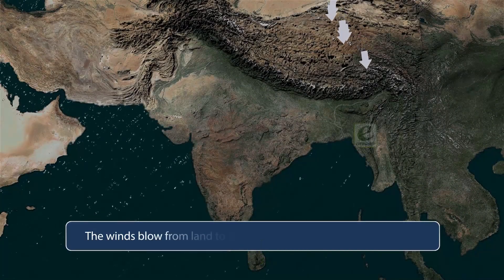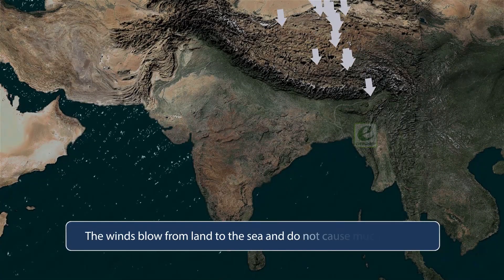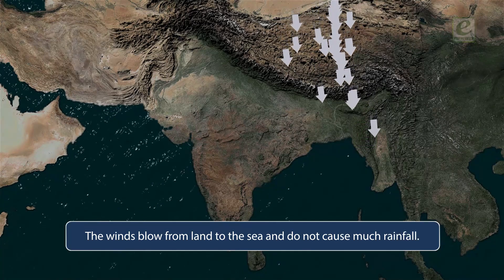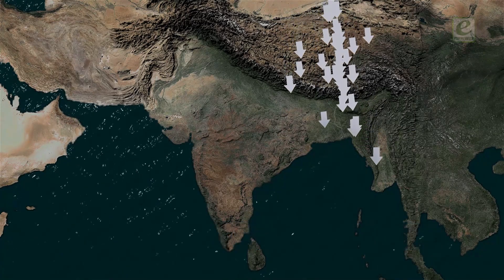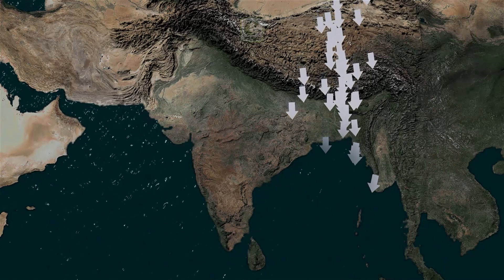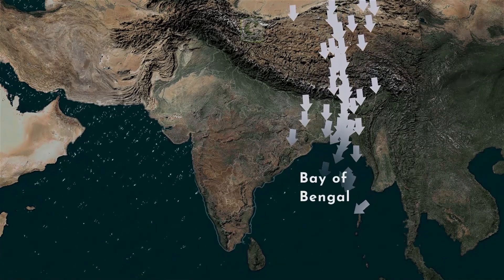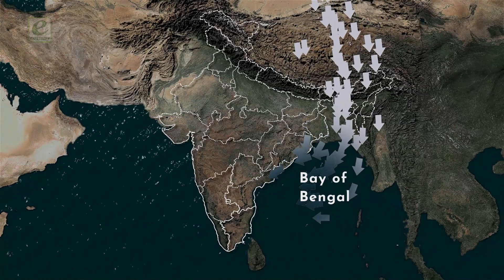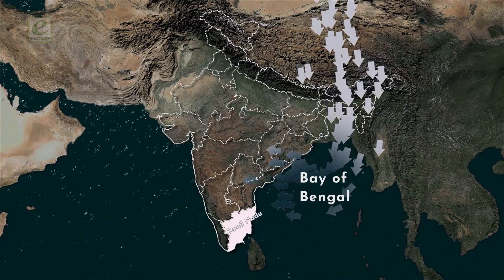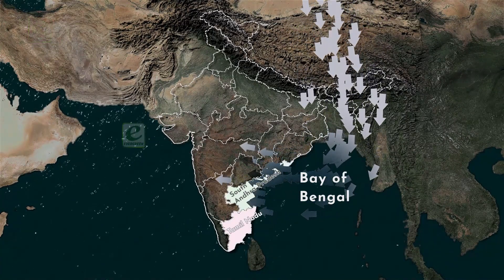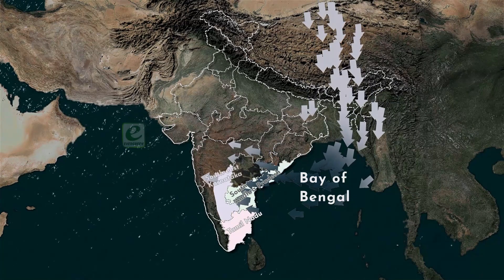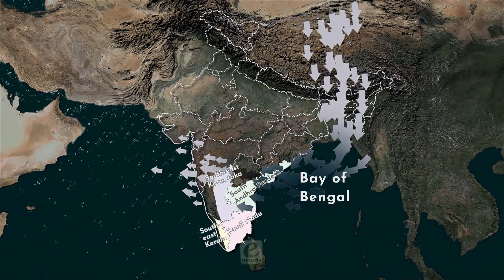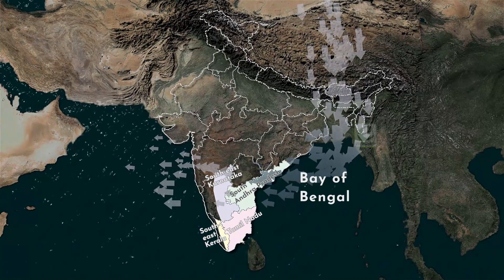The winds blow from land to the sea and do not cause much rainfall. These winds pick up some moisture while crossing the Bay of Bengal and cause winter rainfall in Tamil Nadu, south Andhra Pradesh, south-east Karnataka, and south-east Kerala.